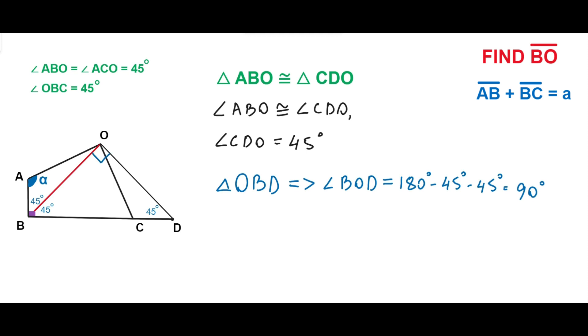The triangle OBD is an isosceles right triangle where the hypotenuse BD equals segment BC plus segment CD, which equals segment BC plus segment AB, which equals A.